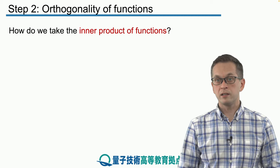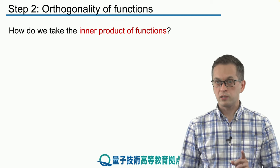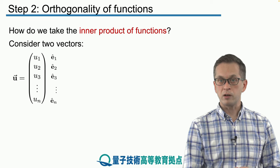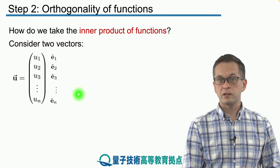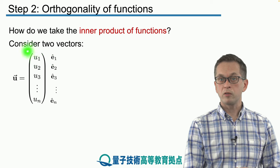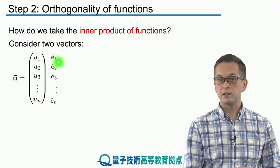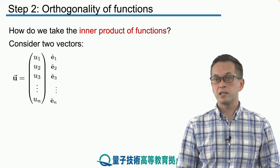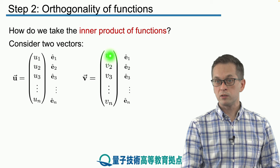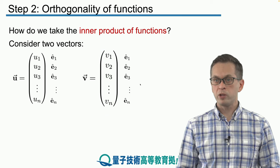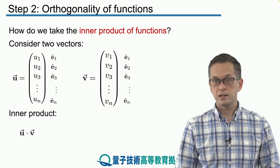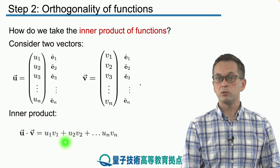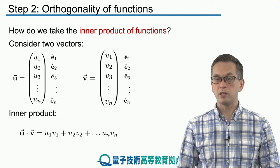Now we will extend the notion of inner product to functions. Let's first consider what the inner product between two vectors is. We have an n-dimensional vector u with coefficients u1 along e1, u2 along e2, and so on up to un along en, and similarly vector v with coefficients v1, v2, up to vn. The inner product of two vectors is the sum of all products: u1 times v1 plus u2 times v2 and so on up to un times vn.